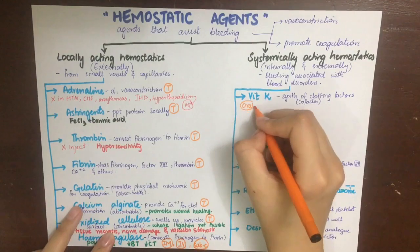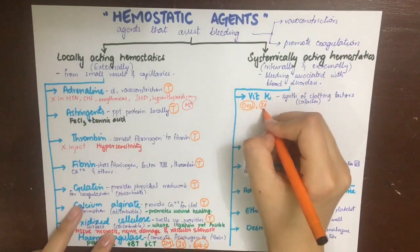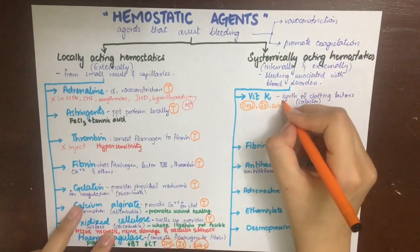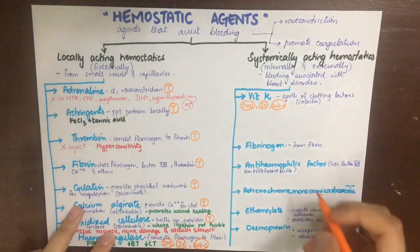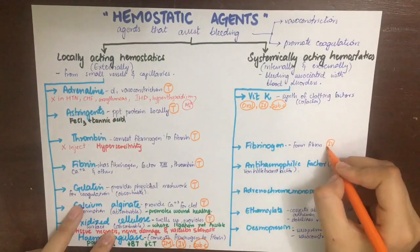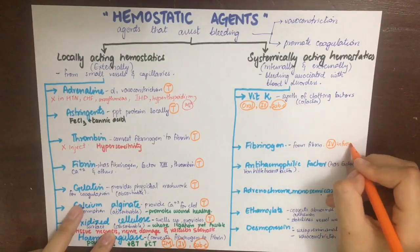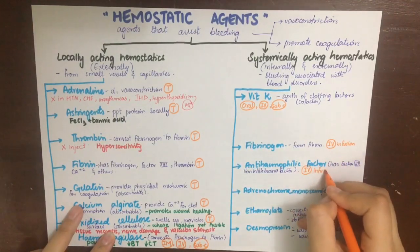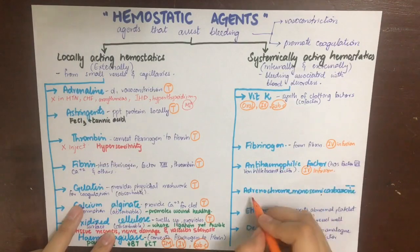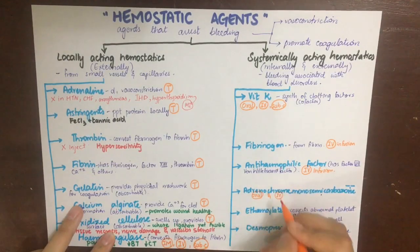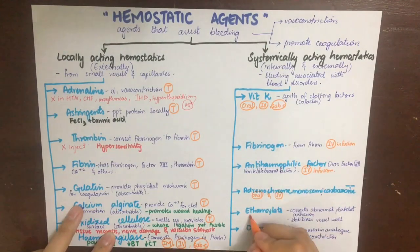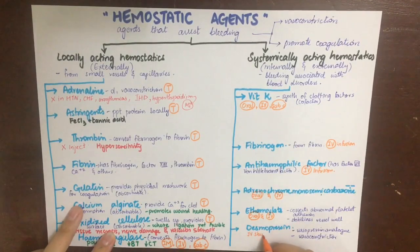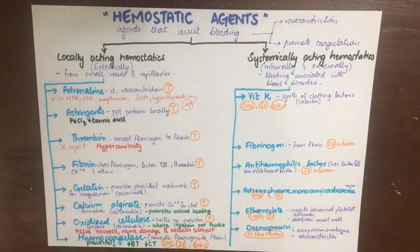Vitamin K can be given orally, intravenously, and subcutaneously. Fibrinogen is given as an IV infusion, and so is anti-haemophilic factor. Adrenochrome mono-semicarbazone is given orally and IV. Ethamsylate is given orally and IV, while desmopressin should be given as a slow IV infusion.